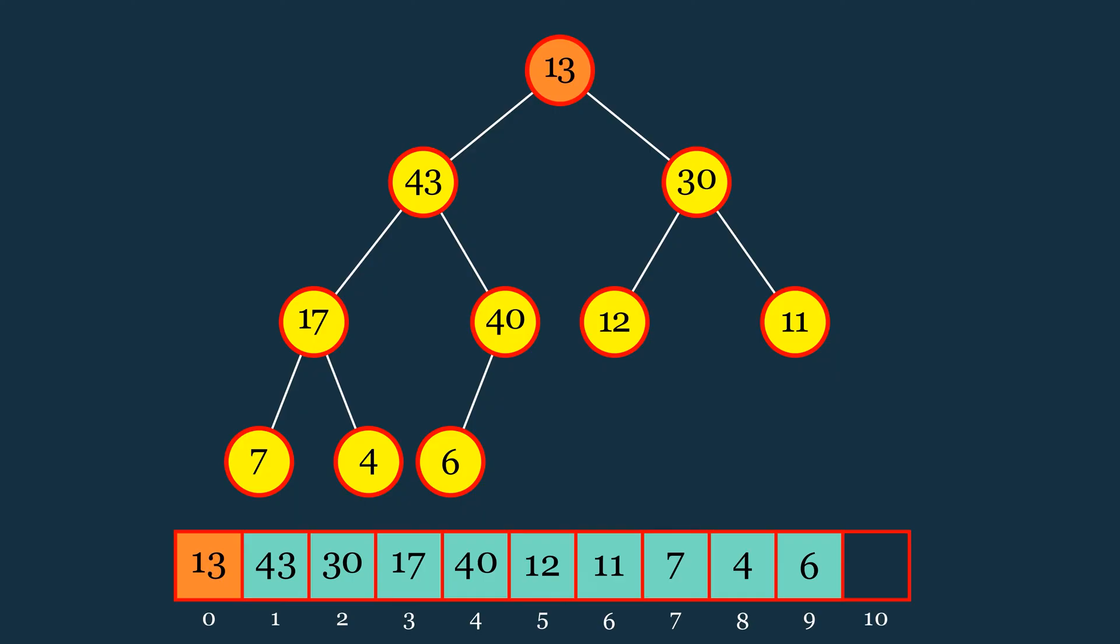We start the heapifyDown process by comparing the current element with both of its children. If either child is larger than the current element, we swap it with the child that has the larger value. In this case, we swap with the left child with value 43. Next, we compare again and swap with the right child, which has the value 40. Finally, we compare the current element with its only remaining child. Since this child has a value less than the current element, no swapping is needed, and the process terminates.